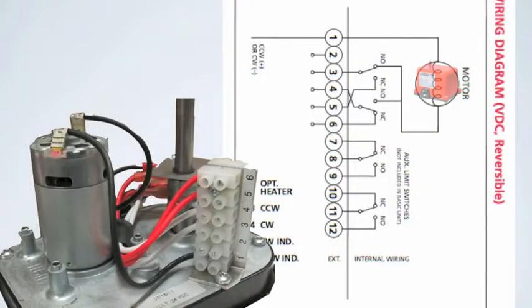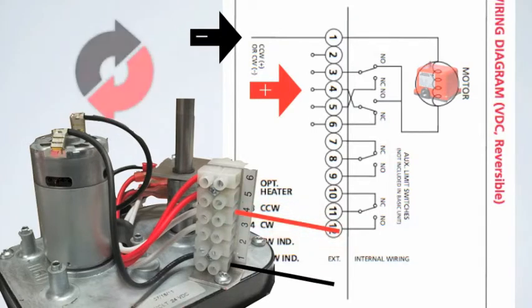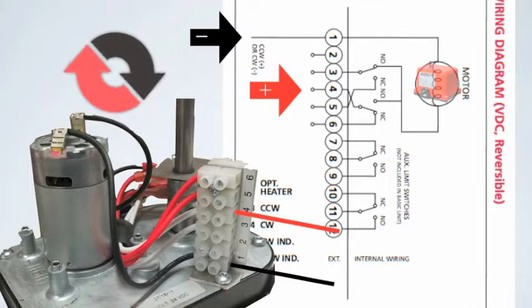To close or drive the actuator in the clockwise direction, apply negative DC voltage on terminal 1 and positive on terminal 4. The actuator will turn clockwise until it reaches the internal limit switch and shuts off.